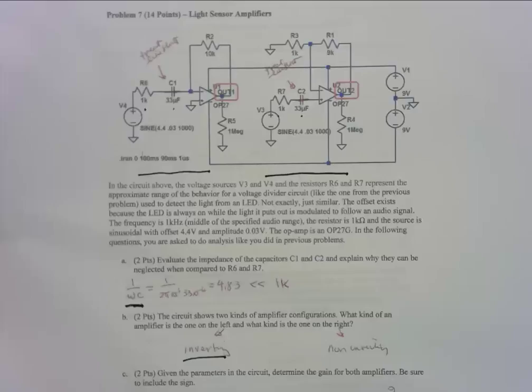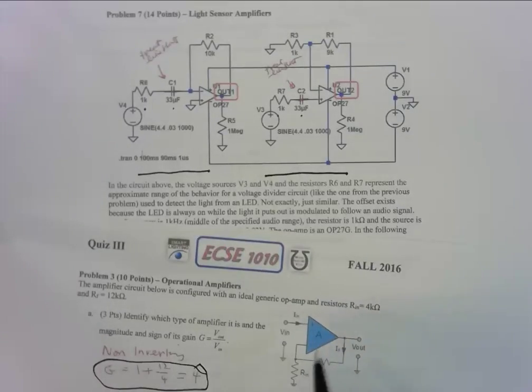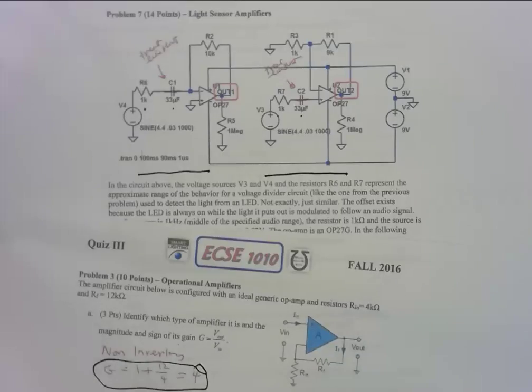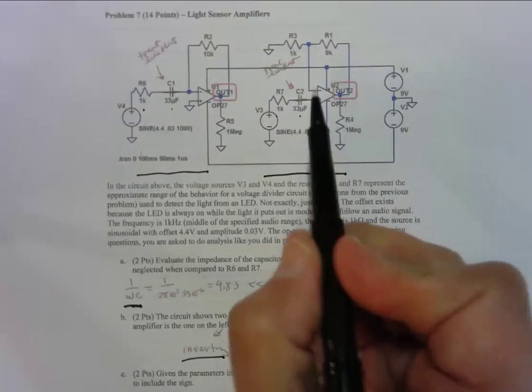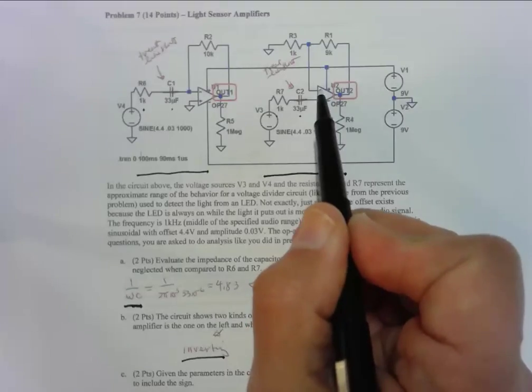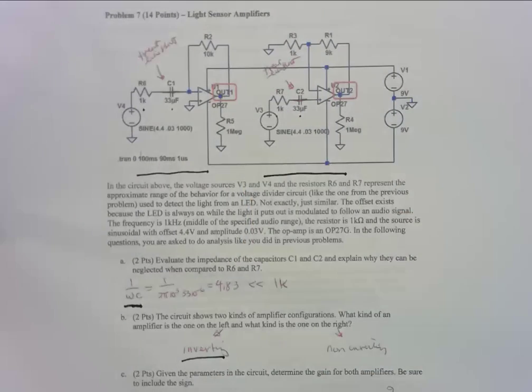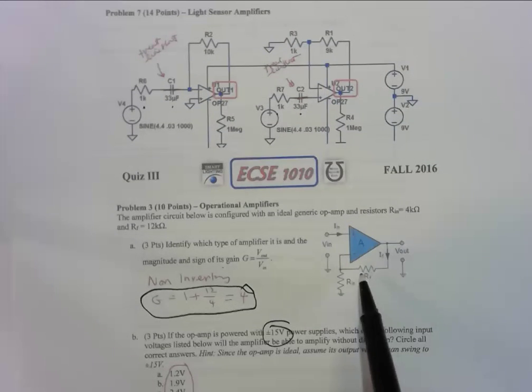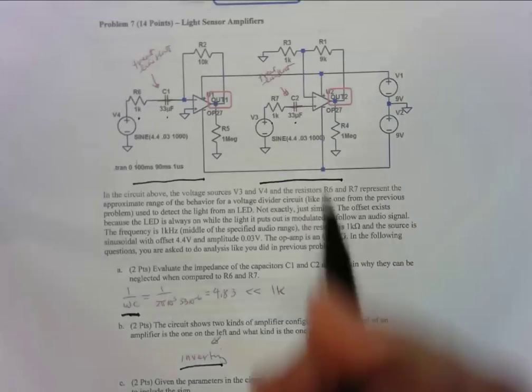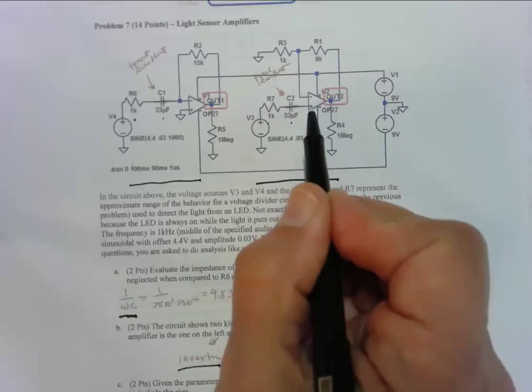Back in problem three, we also saw this configuration where the feedback resistor comes back to the negative input and then there's a resistor to ground. The input comes into the positive input of the amplifier. Since this is a short circuit, the input is coming into the positive input. Here is the feedback resistor coming into the negative input and the resistor to ground. So that is the same exact circuit as this one, with one difference. There is this resistor right here which is connected between the source and the input.